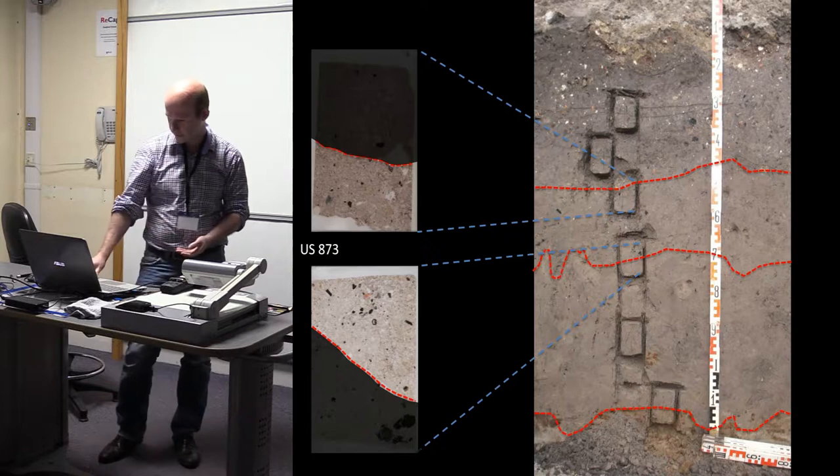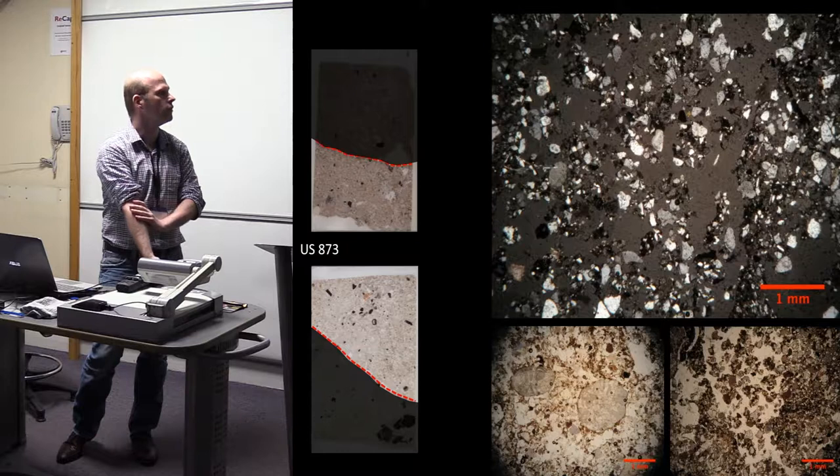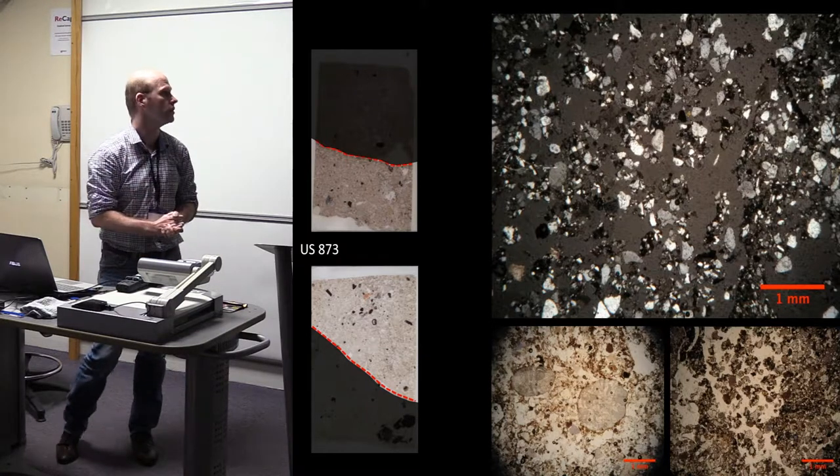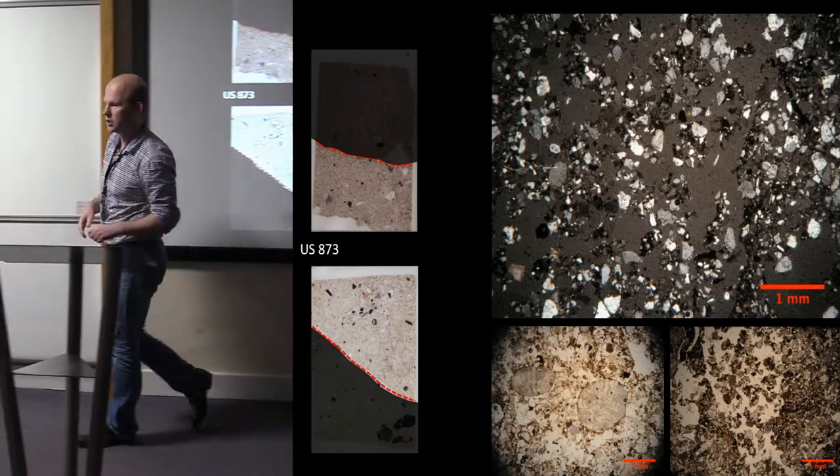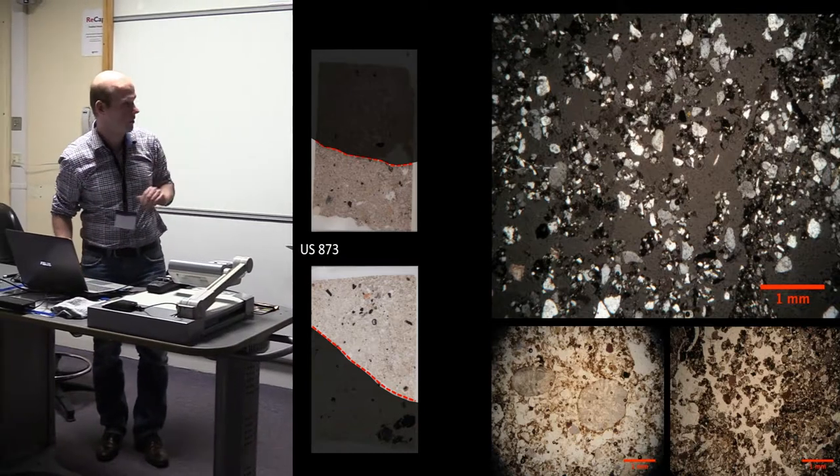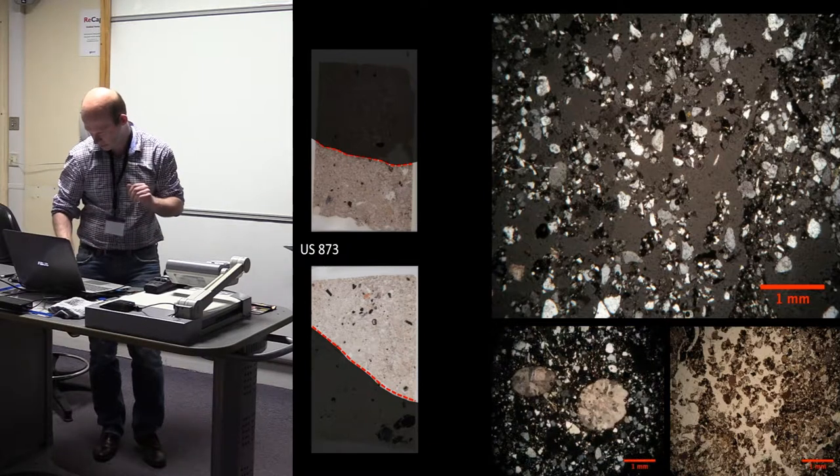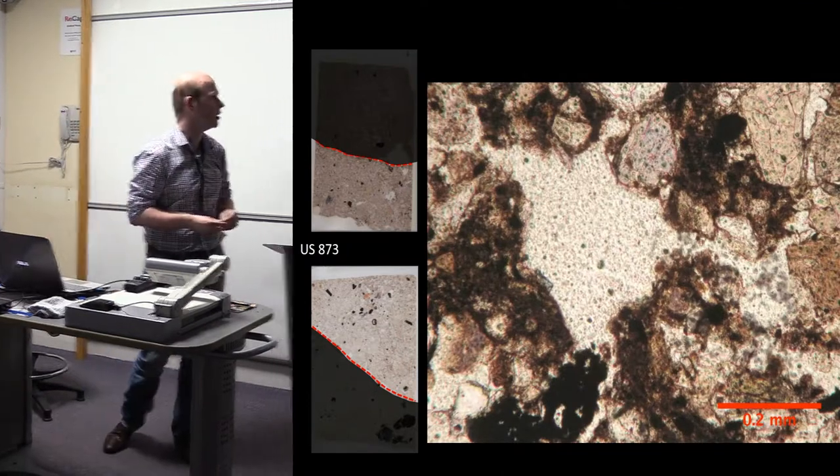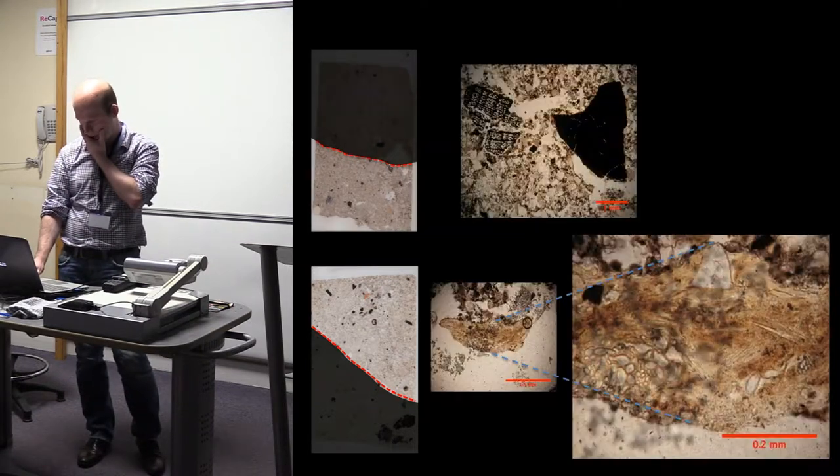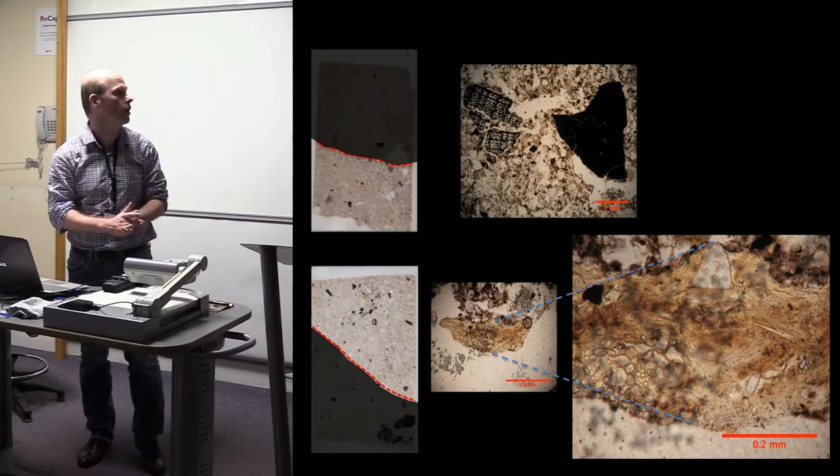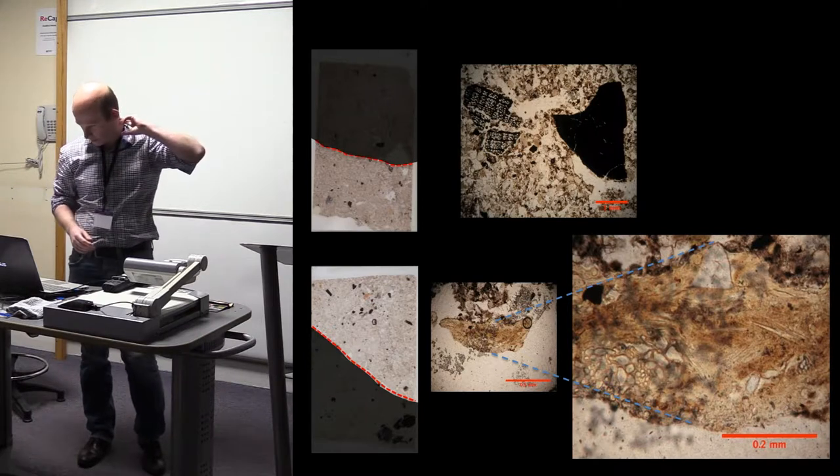When we go up in this sequence, we see that things change. All of a sudden, we have a much more porous horizon. You can see there are a lot of pores here. We have much more bioturbation, not only by earthworms but also by root galleries. We still have the presence of these kind of dusty coatings, and we also have the accumulation of material, of domestic waste. We have some burnt bones, some charcoal fragments, and we still have some coprolites and also some ashes.